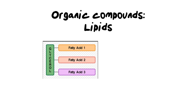Our final organic compound is lipids, also known as fats. This group includes phospholipids — part of the cell membrane, combining phosphorus and fats — steroids, which are fat-based hormones responsible for maintaining homeostasis and promoting growth and repair, and triglycerides, which are true fats. Triglycerides include things like oils, butter, margarine, cheese, salami, avocado, and peanut butter.